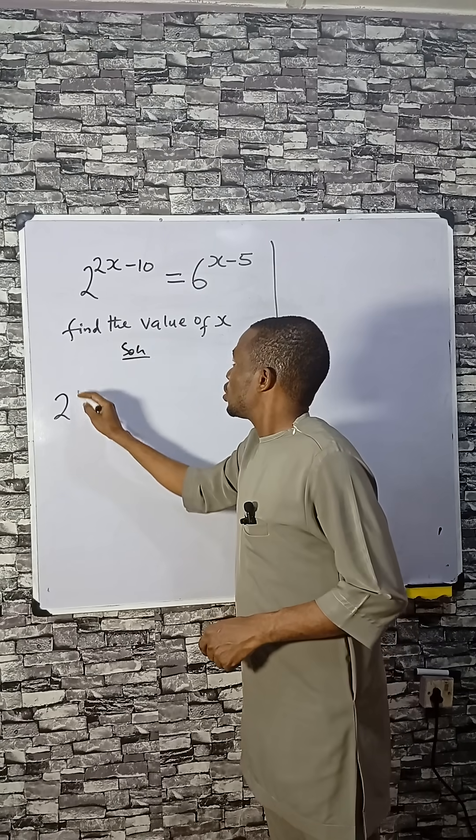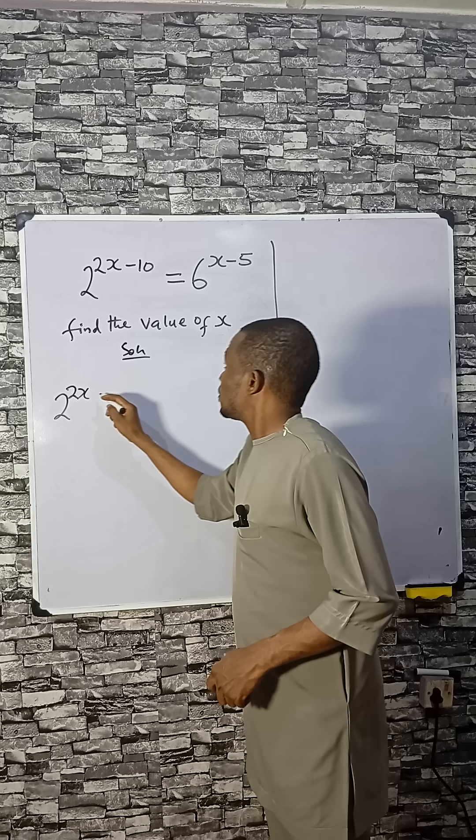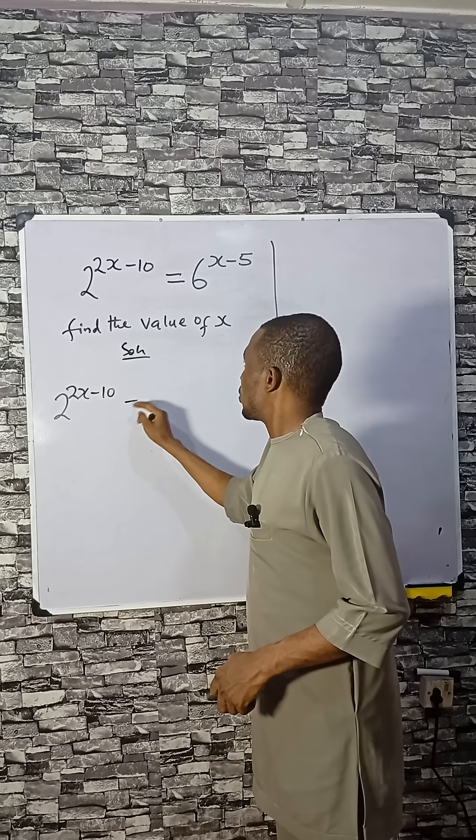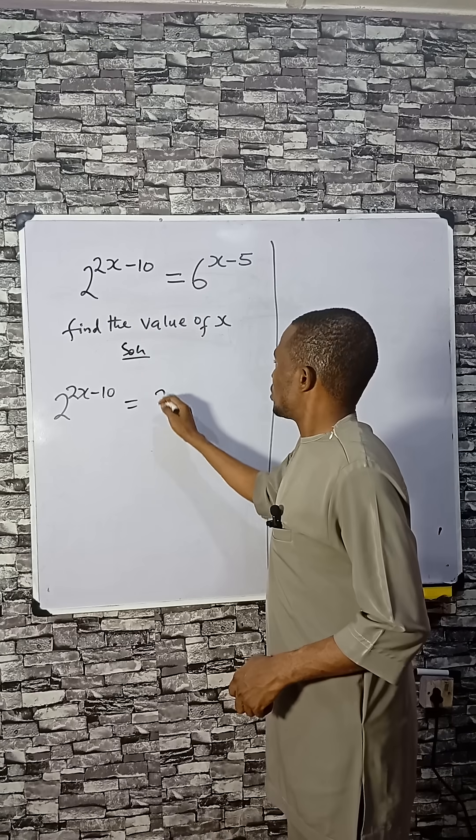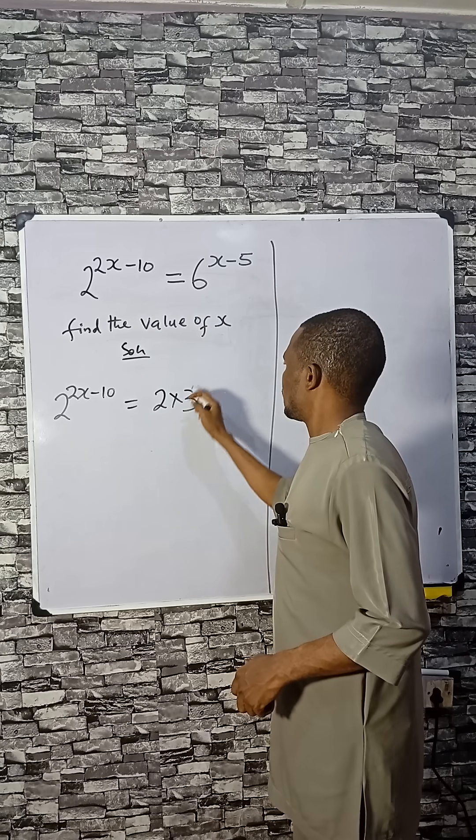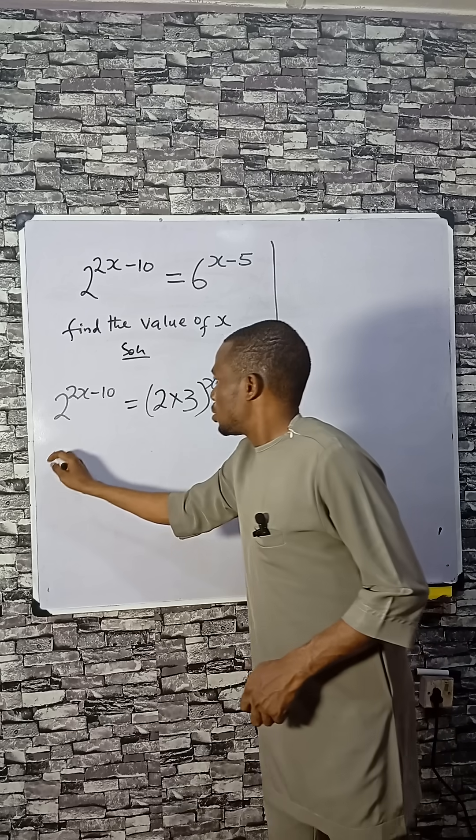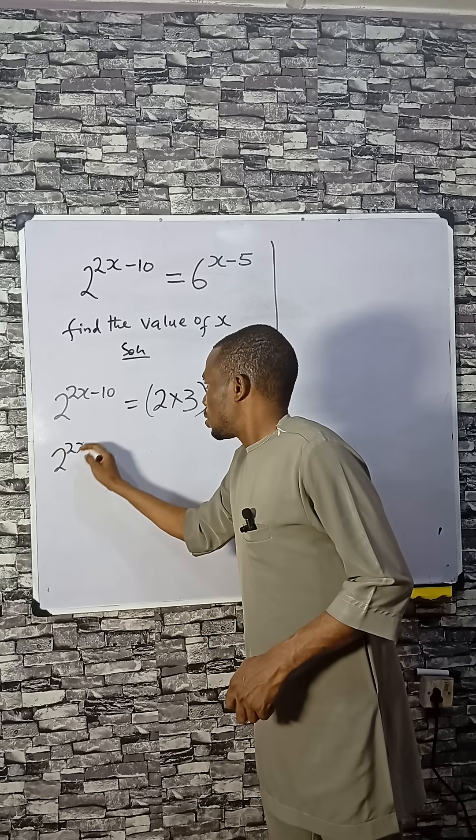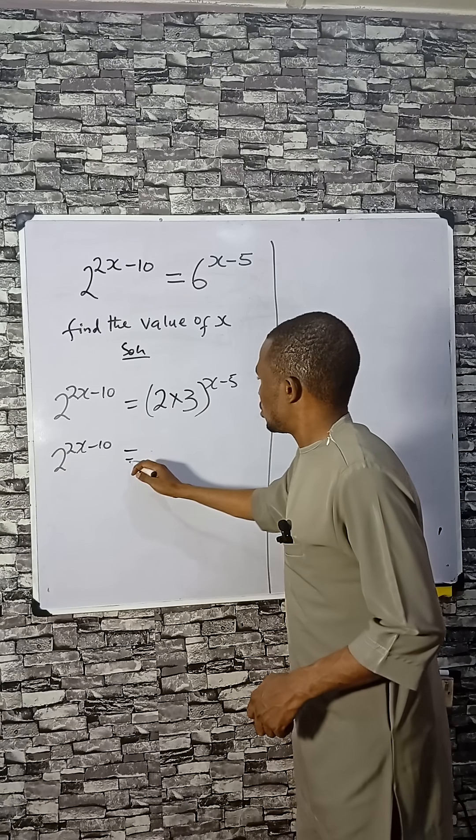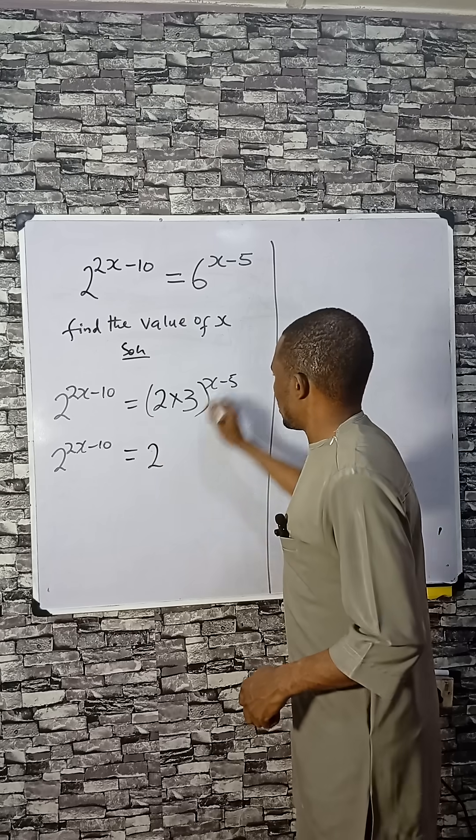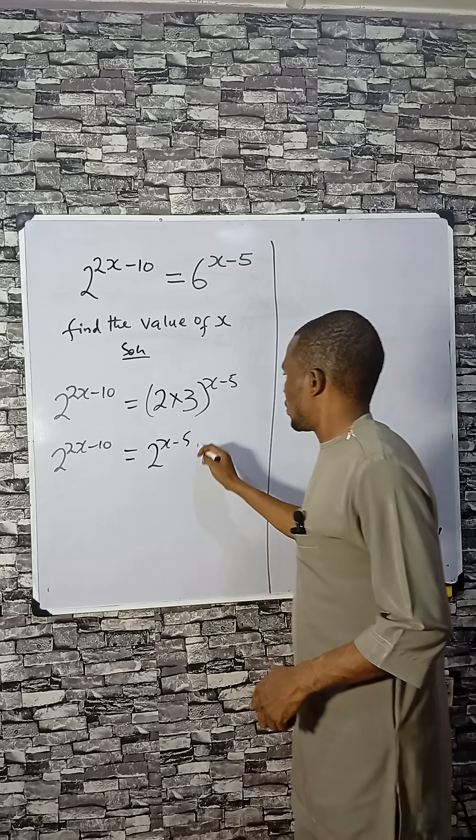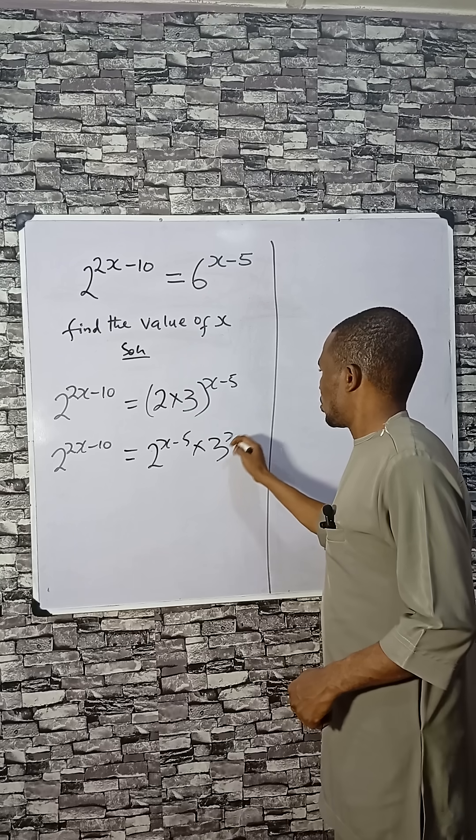Now what you need to do here is: 2^(2x-10) equals 6^(x-5). Since 6 is 2 times 3, we can distribute the power to every member that is there. That means 2 will pick x minus 5, and 3 will pick x minus 5.